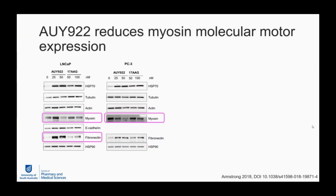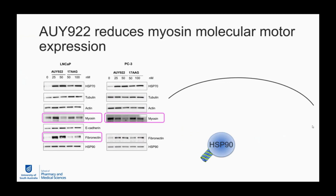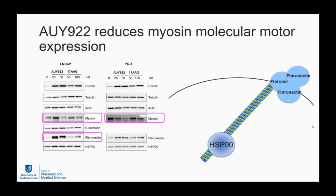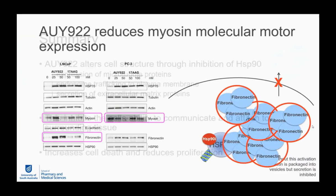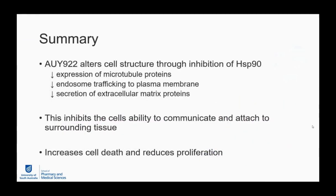We saw increased density of fibronectin staining in cells in punctate compartments identified as early and late endosomes — the co-localization shown in white — with no accumulation in lysosomes where it would be degraded. So the method of secretion may be from multivesicular bodies or early endosomes. This makes sense since fibronectin has been found in extracellular vesicles released from prostate cancer cell lines and in plasma and urine from clinical patients. Trafficking to the plasma membrane is dependent on microtubule-associated motor proteins — several of which are known HSP90 clients — and we saw reduced myosin expression in response to HSP90 inhibition, which may explain impaired fibronectin trafficking.